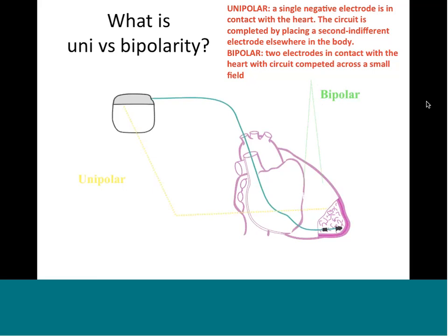In bipolar, both electrodes are in contact with the heart, and the circuit is completed right across a small field. Most dual chamber pacemakers that you use are all bipolar. The ones that you use post-op - temporary pacemakers - tend to be unipolar.